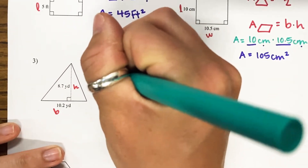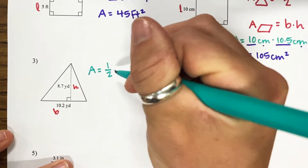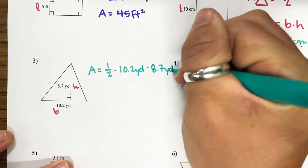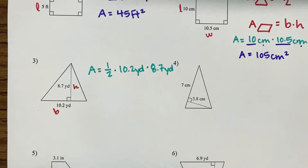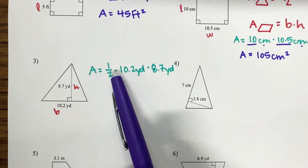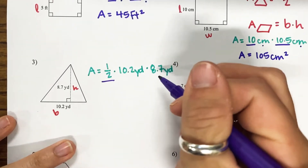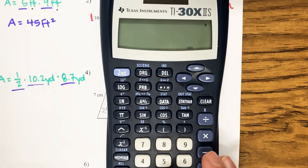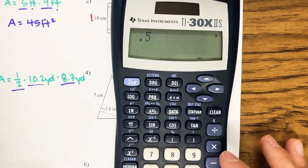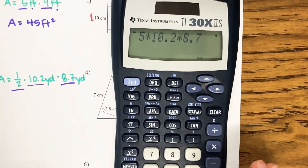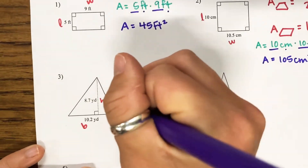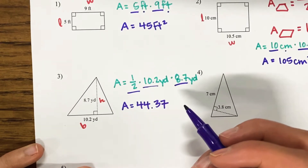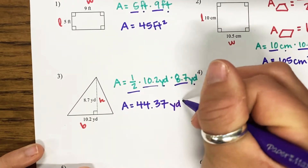The area of this triangle is one-half — we must remember the one-half — times my base, which is 10.2 yards, times my height, which is 8.7 yards. So the numbers I'm going to be punching into the calculator are: one-half times 10.2 times 8.7. Remember, one-half in your calculator we can just use as 0.5. So 0.5 times 10.2 times 8.7 gives me 44.37. So our area is 44.37. The unit of measurement is yards, and because there are two of them being multiplied, we get yards squared.